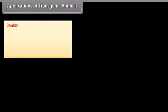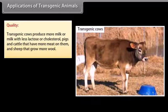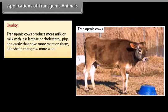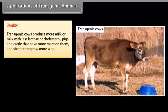Quality. Transgenic cows can produce more milk, or milk with less lactose or cholesterol. Pigs and cattle can have more meat on them, and sheep can grow more wool.